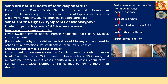What are the signs and symptoms of monkeypox? The incubation period is generally 6 to 13 days but may be more. The invasion period is manifested by fever, swollen lymph nodes, intense headache, back pain, myalgia, loss of muscle power, and intense asthenia. Lymphadenopathy is a distinctive feature of monkeypox compared to other similar affections like smallpox, chickenpox, and measles — swollen lymph nodes occur in monkeypox but not in those other diseases.